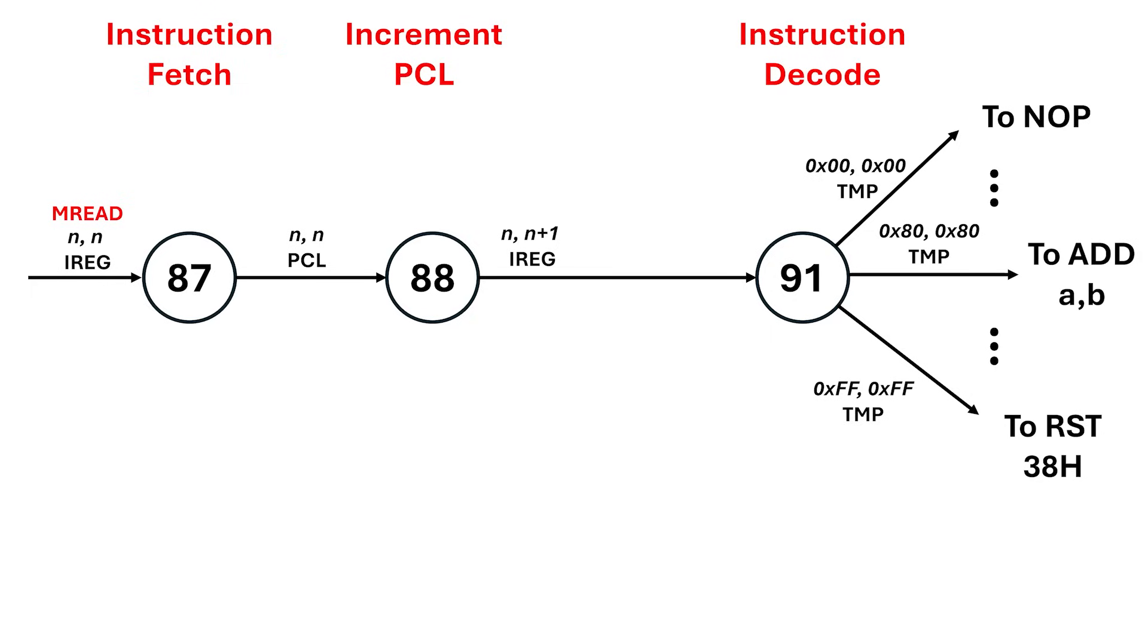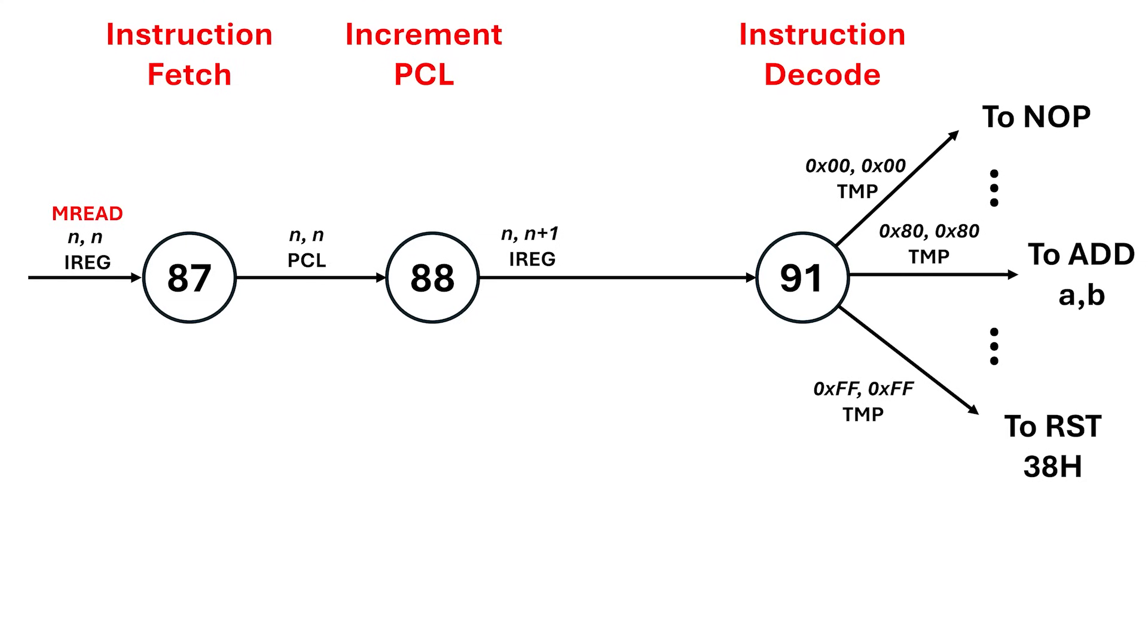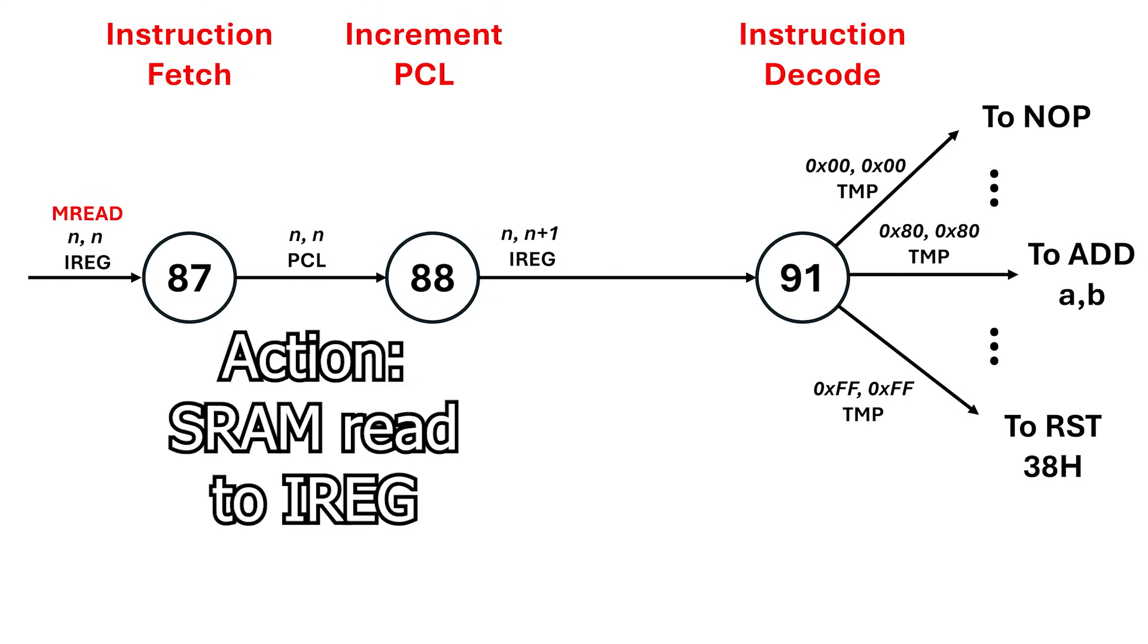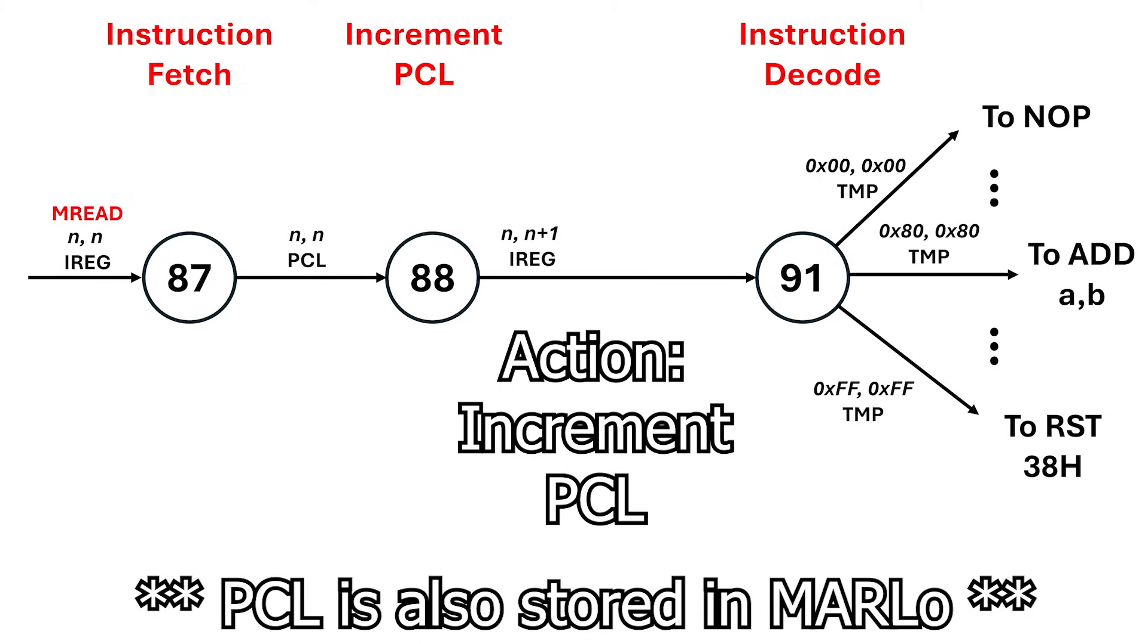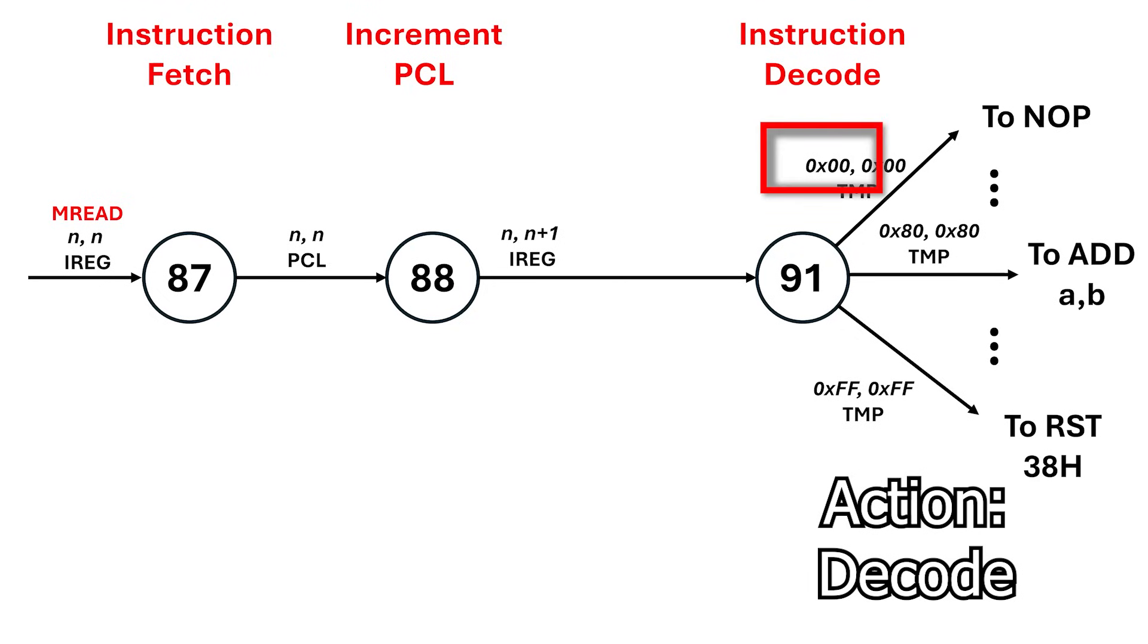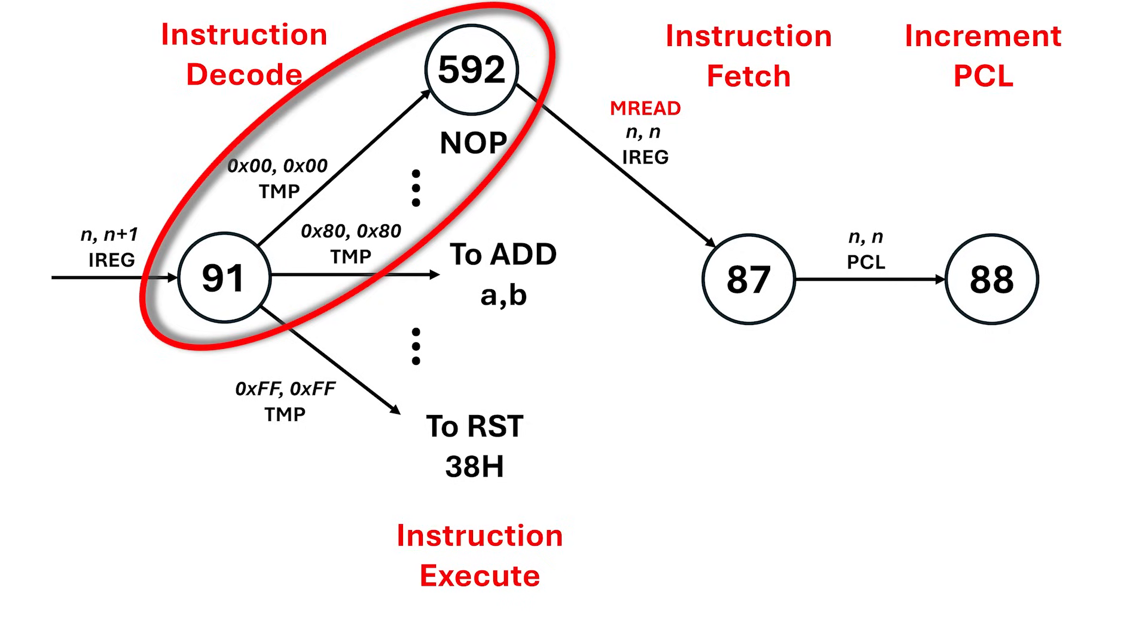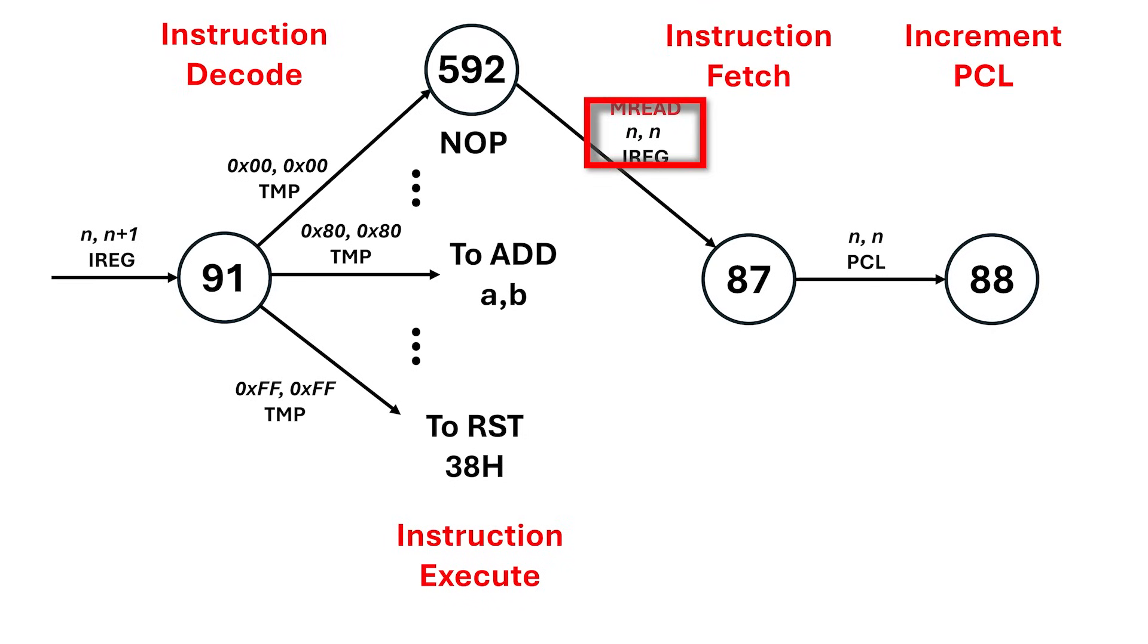This is the state diagram for instruction fetch. Now, at this point in the cycle, program count has already loaded into the memory address registers. So, we do what you'd expect. Perform a static RAM read to fetch the instruction, then increment program counter low. If that increment lands us between 1 and 255, we're good. We just jump straight to the decode stage. From there, we fan off to one of a bunch of different state machines, based on the instruction we read from main memory. If we read 0 hex, then we go down the no-op state machine pathway. The state machine for no-op is at state 592, but we know that no-op doesn't really do anything. So, it just leaves the temporary variable unchanged. And from there, it goes back to state 87 and starts the instruction fetch cycle again.